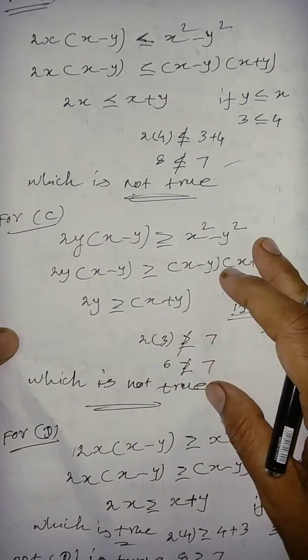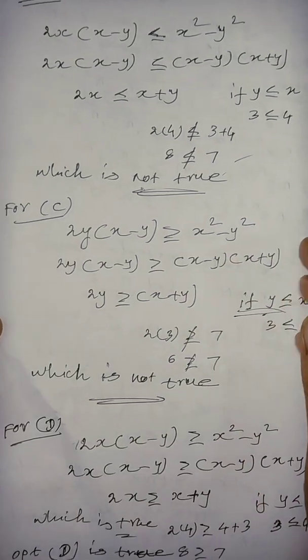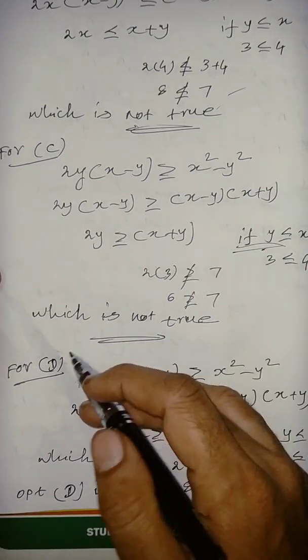So, suppose, you can generalize this one, obviously, not true, is it right? So, for option D, this one.